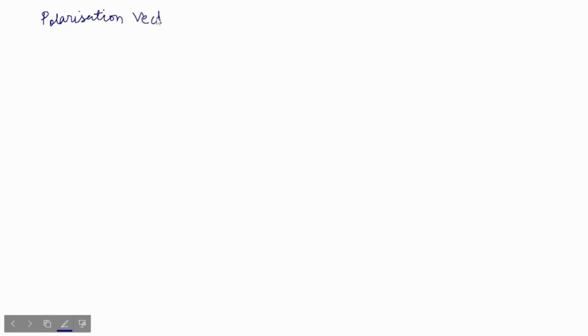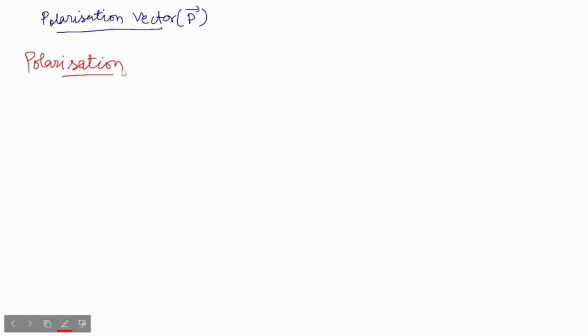Hello everyone, in this video we will be studying about polarization vector and polarization. Before understanding polarization vector, we need to understand what polarization is. Polarization is basically defined as the alignment of dipole moments of permanent or induced dipoles in the direction of the applied electric field.